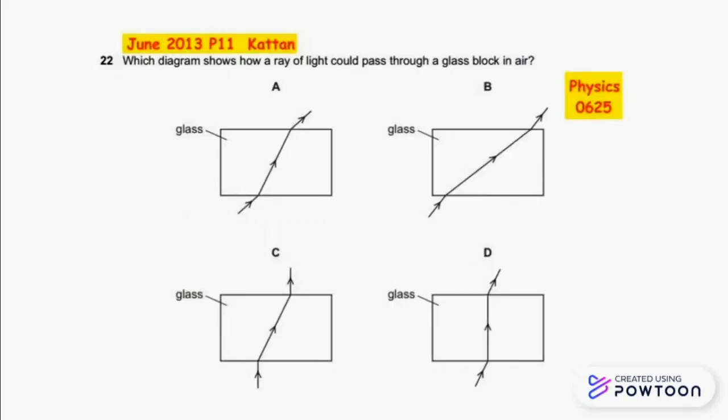Hi guys and welcome to our physics series. Today we have June 2013 paper 11 question 22: which diagram shows how a ray of light could pass through a glass block in air?